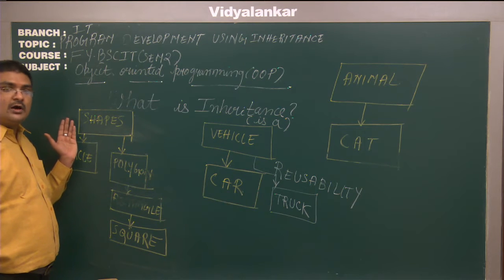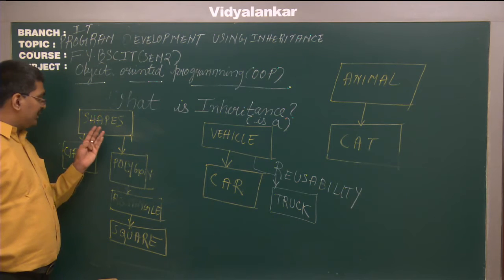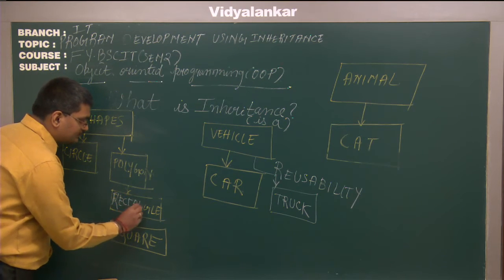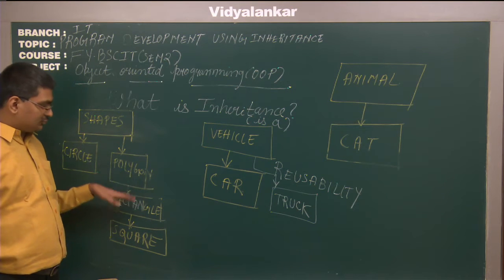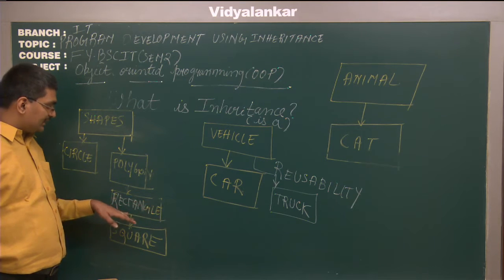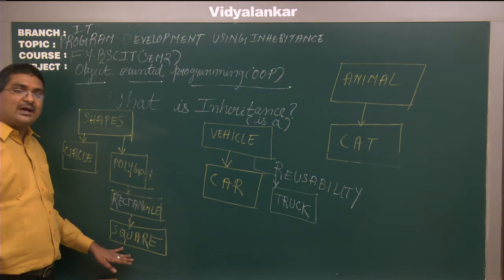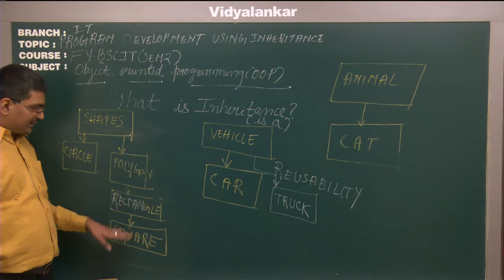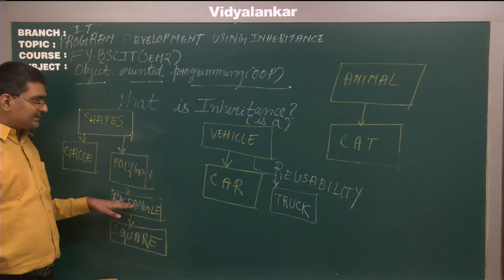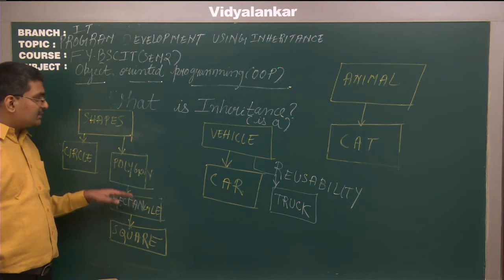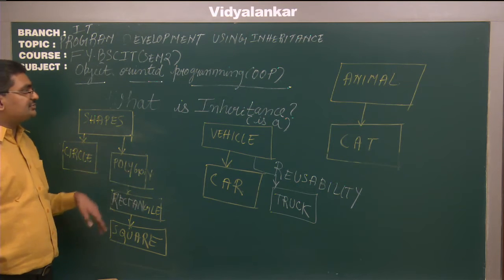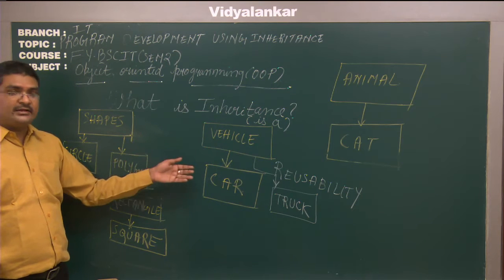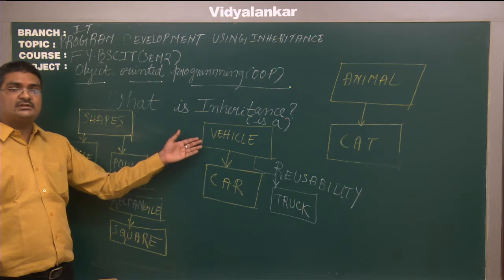Another example involves shapes. We have circle and polygon; polygon has various sides. A special type of polygon is rectangle, and when all sides of a rectangle are equal, that becomes a square. So square inherits from rectangle — square is the child class, rectangle is the parent. Rectangle is in turn a child of polygon, which itself is a child of shapes, forming a clear parent-child hierarchy.